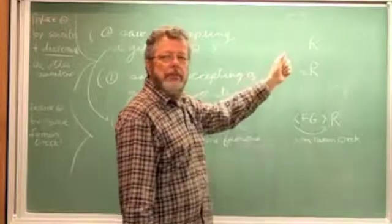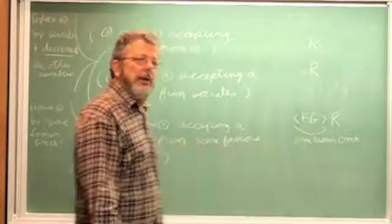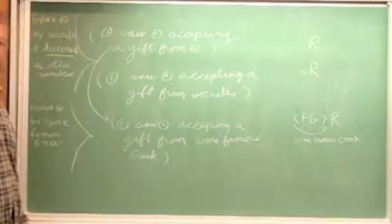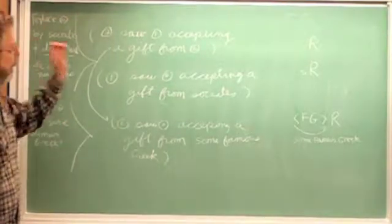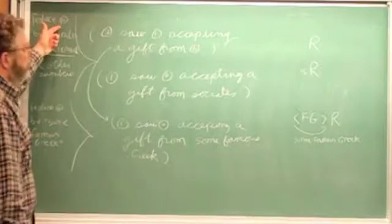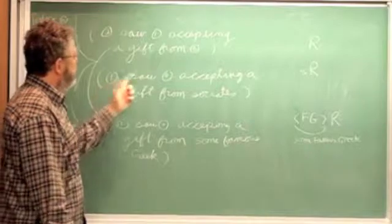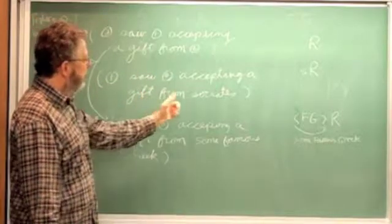Now, if we apply R to Socrates, what it means is Socrates refers to the last name blank, namely zero. So what we do is we simply replace zero by Socrates, and we detriment the others. So this becomes one saw zero, except when we get from Socrates.